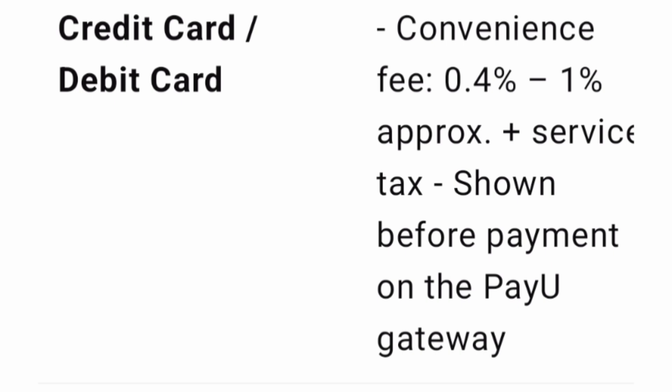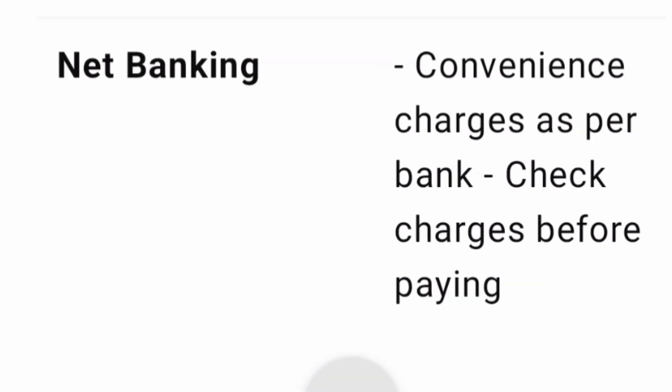If it is 0.5%, it will be one thousand five hundred rupees as an additional charge. That is called the convenience charge. Plus there will be some service tax as well — the service tax will be a smaller amount, shown to you before your payment; it can be 45, 50, or 100 rupees. So there are two charges: convenience charge plus service tax in case you are using a credit card or debit card.